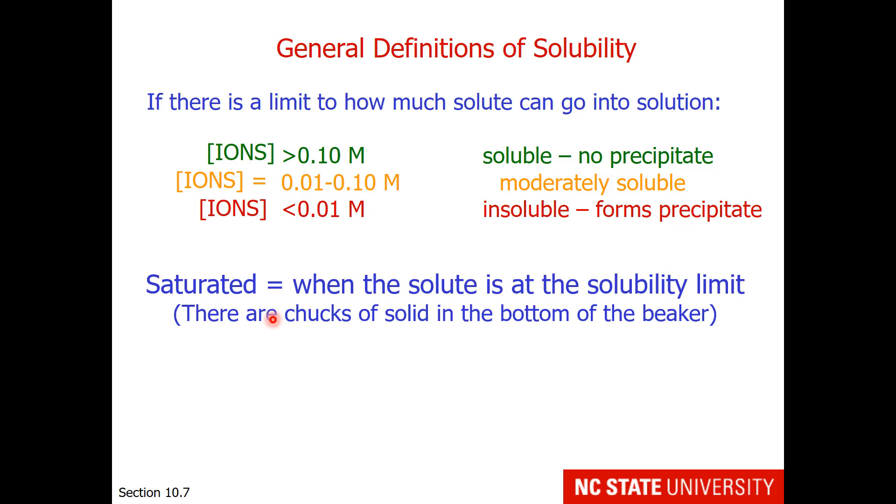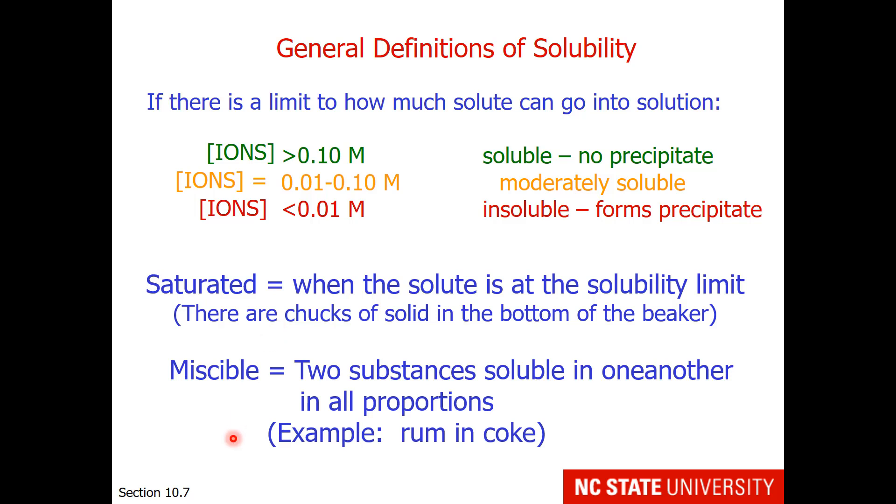Saturated is a term we use when the solute is at the solubility limit, meaning when there are chunks of solid in the bottom of the beaker. Like our sweet tea with sugar in the bottom, that would be a saturated solution containing sugar. Miscible would be a term for two substances soluble in one another in all proportions. I would use methanol in water, but I thought you might relate to rum in coke. You may have all coke, you may have all rum, or you may have any combination in between.